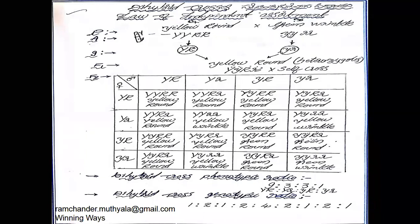These two plants act as parental plants — one as a male plant and one as a female plant by emasculation. From the dominant parental plant, capital YR gametes are developed; from the recessive parental plant, small yr gametes are developed. These gametes fuse to form the F1 generation, which contains capital Y, small y, capital R, small r genes in a heterozygotic condition.